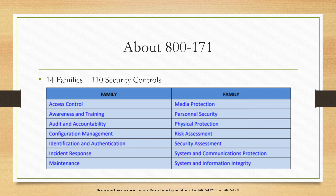Identification and authentication covers what users are approved to access CUI and how they are verified prior to granting them access. That's 11 controls of the 110. This goes hand in hand with access control — access control is about who is authorized to view the data, while identification and authentication is about how you validate that that person is actually the one viewing the data.